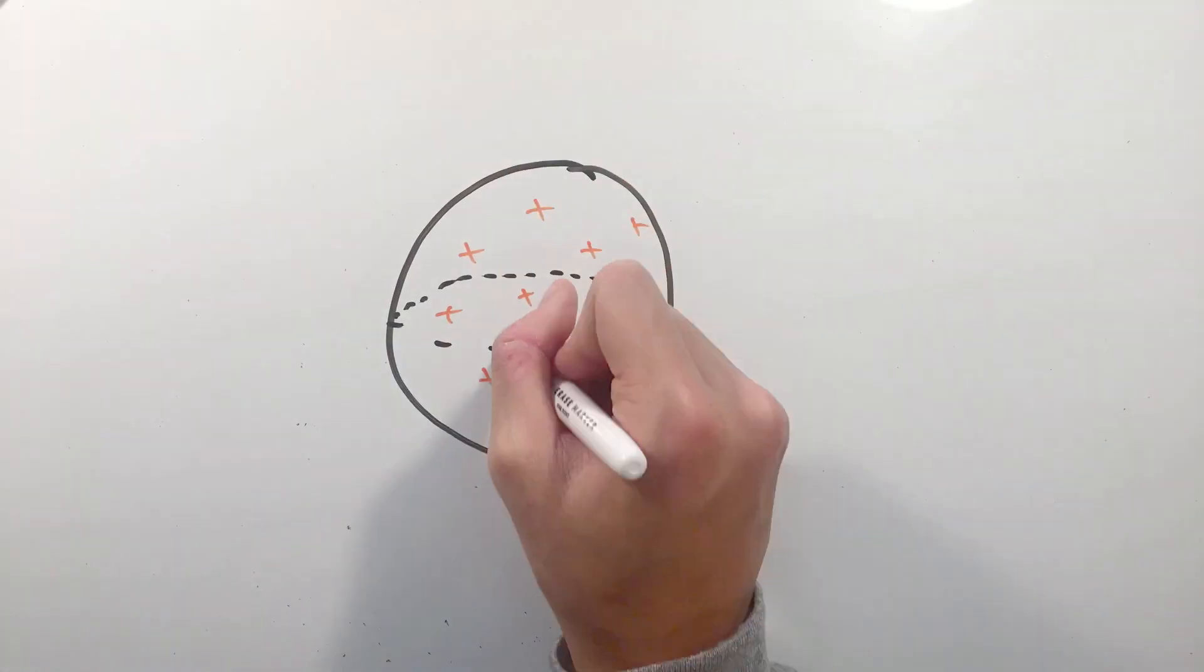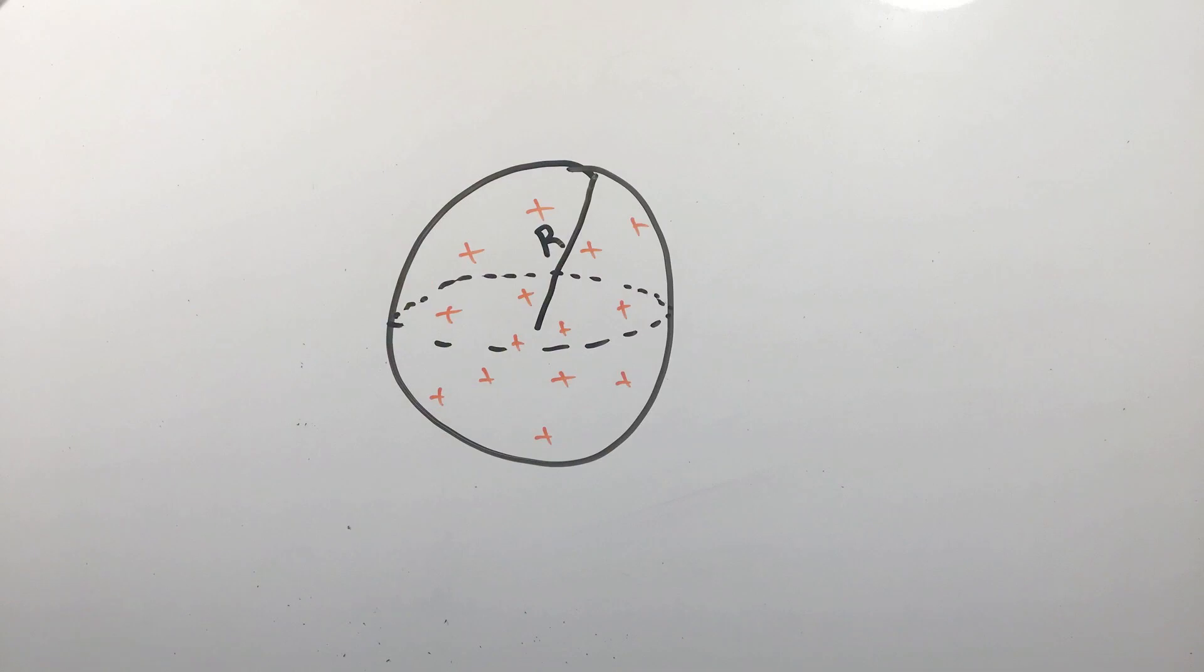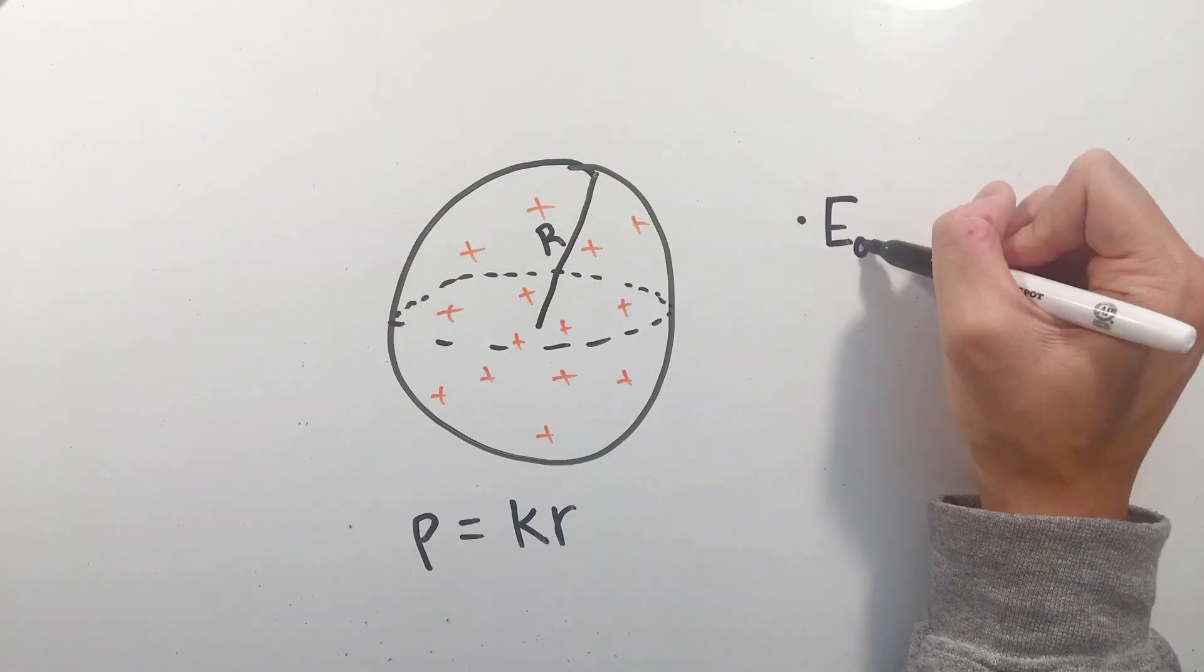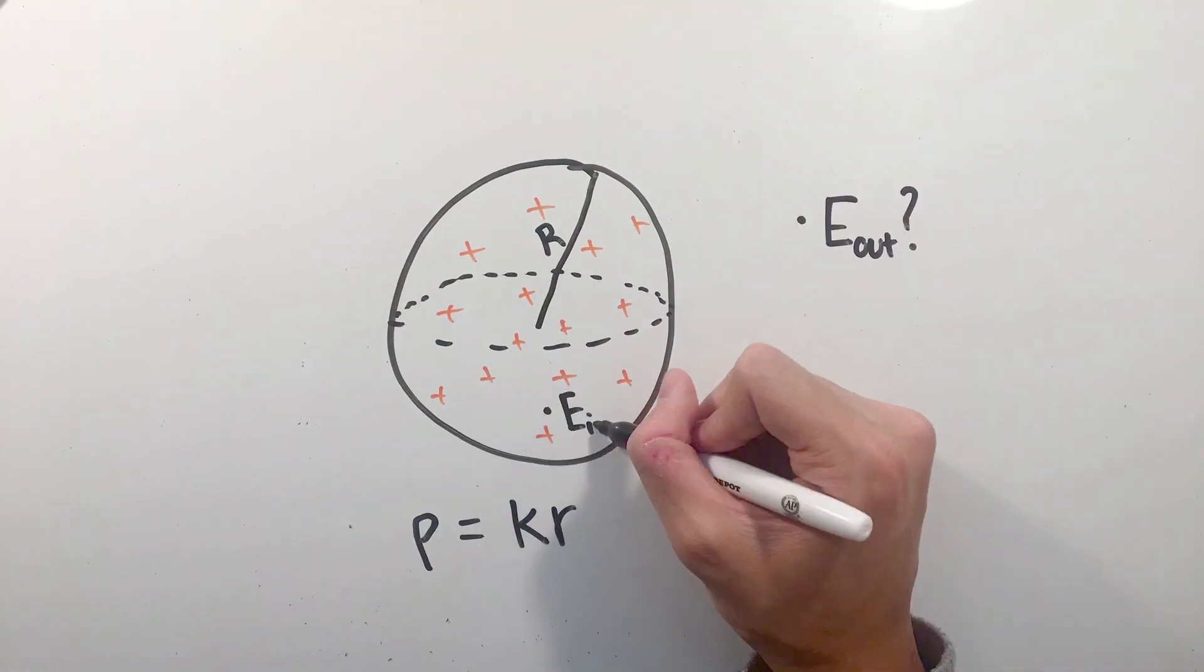One final charge distribution you may see is an insulating sphere with charge density ρ and radius big R. However, let's make things a little more interesting by making the charge density change linearly with radius, or that ρ equals some constant k times the variable radius small r. More importantly, let's take a look at the electric field both inside and outside of this sphere.